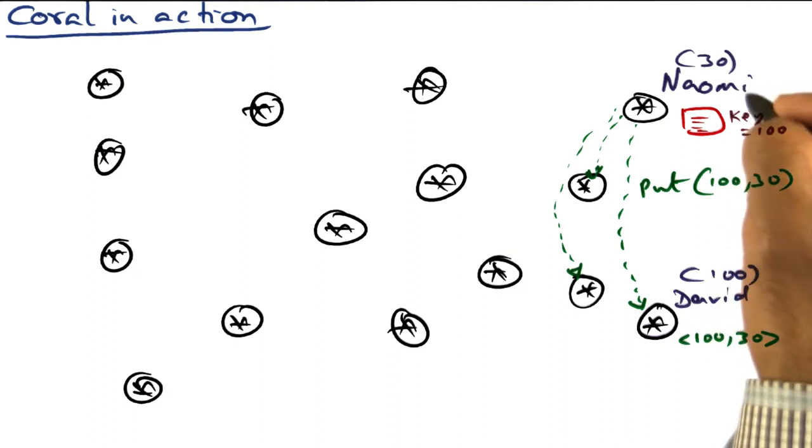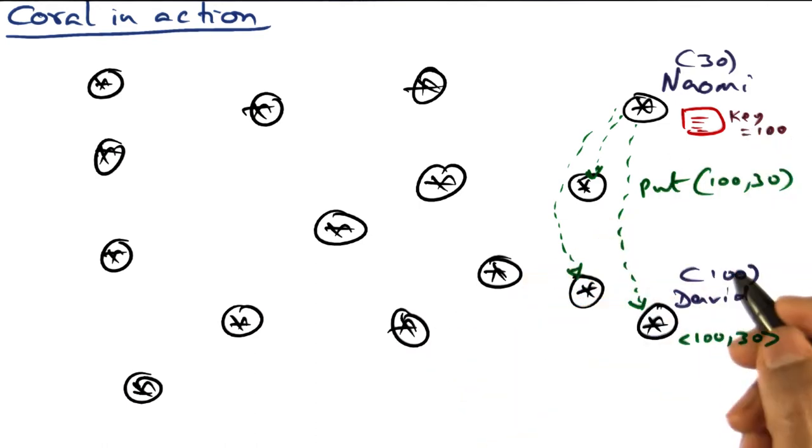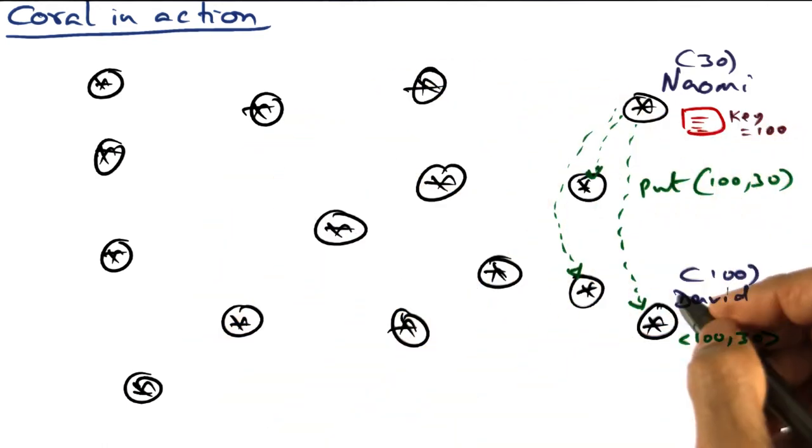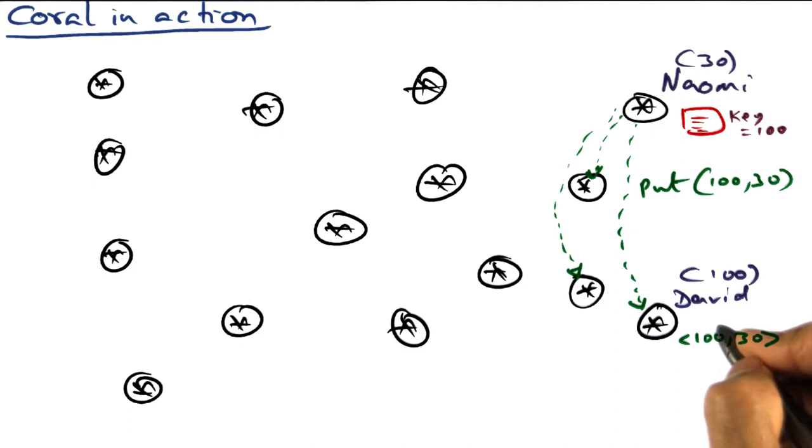How can it be? Because she just created this content 100. So this key 100 is not known to the world. So nobody is at this point serving as a metadata server for this particular key. So David is the right place to keep it. So David hosts this particular key value pair, 130.